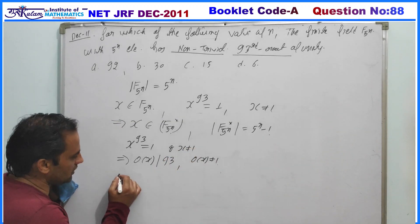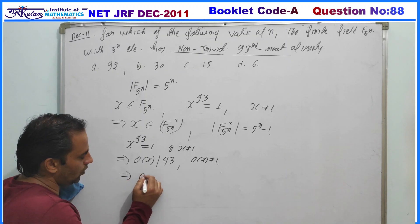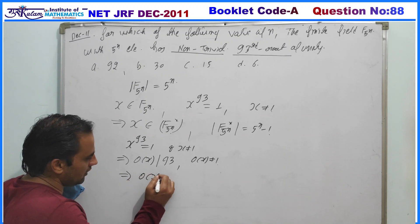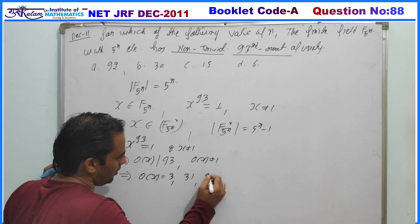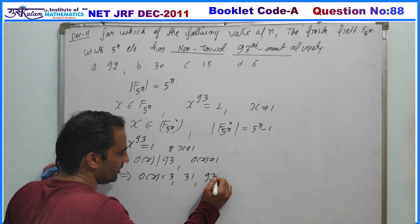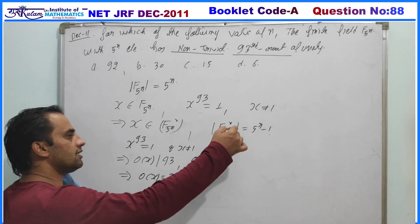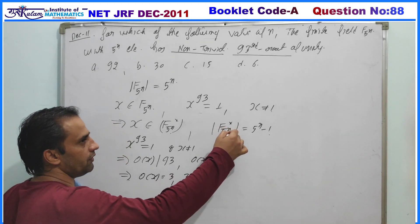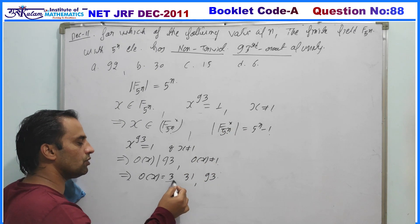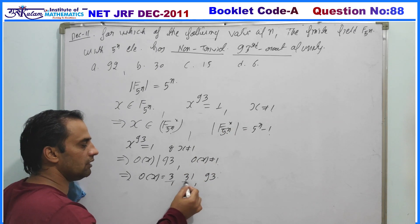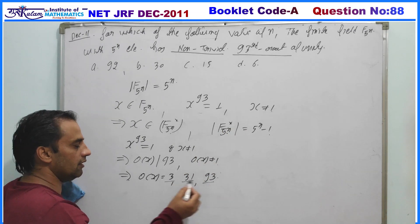Since we need a non-unity element which is a 93rd root of unity, the order of x can be either 3, 31, or 93. So in this structure we have to find an element whose order can be 3, 31, or 93.